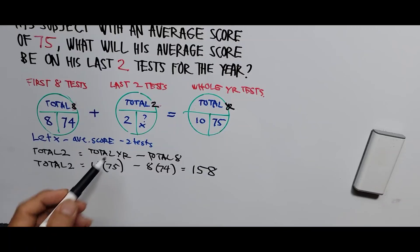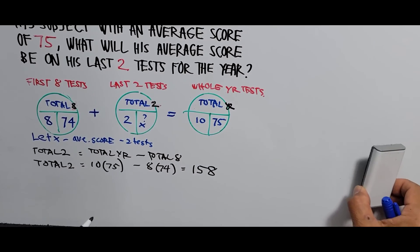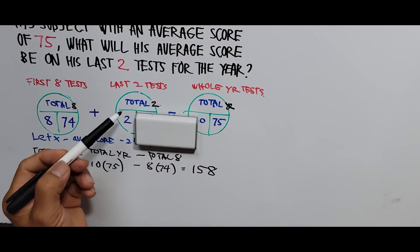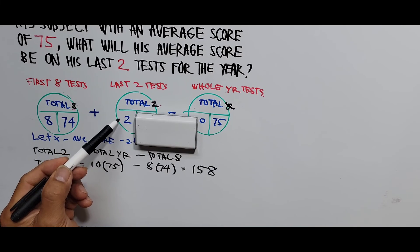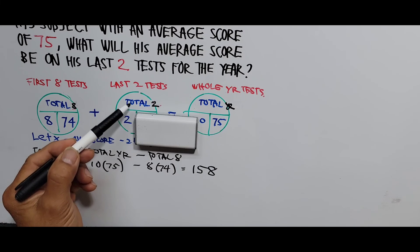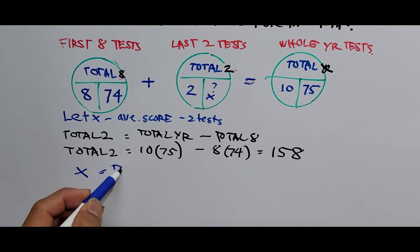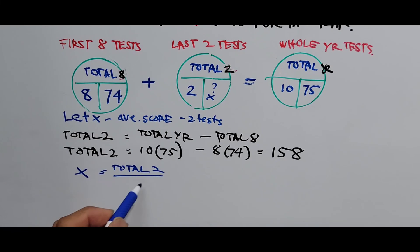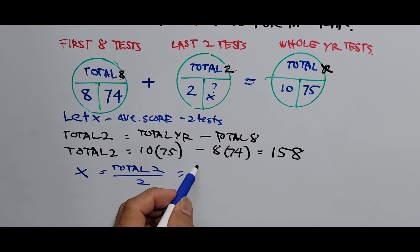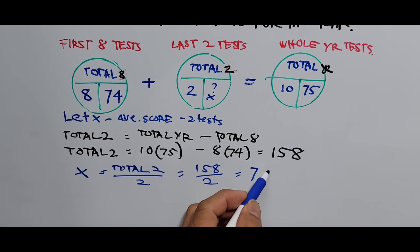Now that we've found the total for the last two tests, we can find the value of x — the average. To find x, cover the average on the pie: you take the total divided by 2, since there are two exams in this part of the year. So x equals 158 divided by 2, which equals 79. That's our answer: 79.